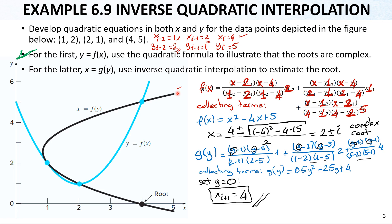The inverse quadratic interpolation formula provides us the real root, whereas the regular quadratic interpolation gives only a complex root. This is the key advantage of using the inverse quadratic interpolation method.